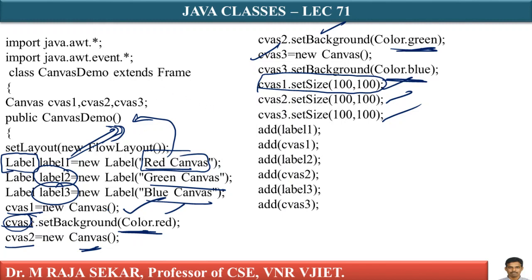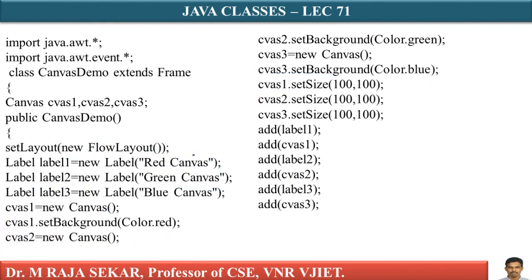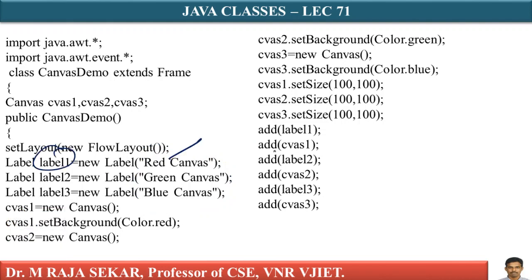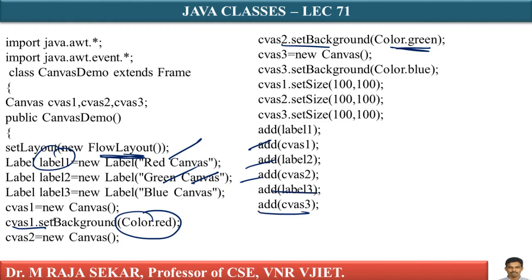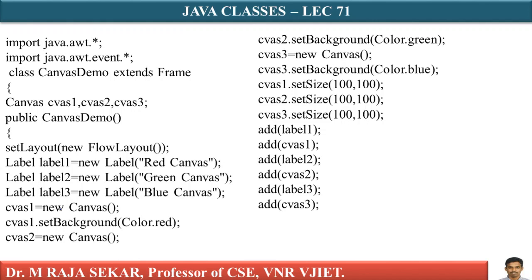I created three labels and three canvases. Now I am adding all of them to my frame. Add Label1 — 'Red Canvas' — then add CAVS1 whose background color is red. Add Label2 — 'Green Canvas' — then add CAVS2 with green background. Similarly, add Label3 and CAVS3. Since the layout is FlowLayout, components are added one after the other. It is a simple and straightforward program.